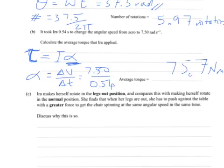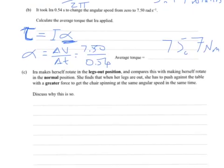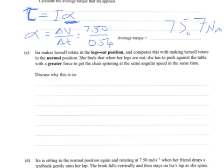Part C: Ira makes herself rotate in the legs out position and compares this with making herself rotate in the normal position. She finds that when her legs are out, she has to push against the table with a greater force to get the chair spinning at the same angular speed at the same time. Discuss why this is so.